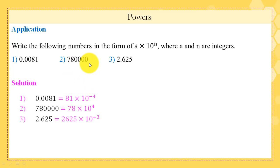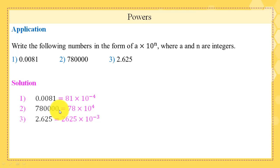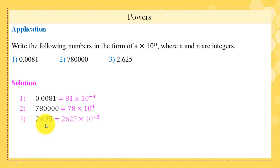For 780,000: you can write it as 78 times 10,000, and 10,000 is 10 to the power 4, so 780,000 equals 78 times 10 to the power 4. Alternatively, place a decimal point behind the last zero and count four zeros before the decimal point to get the same result. Finally, 2.625 has three numbers after the decimal point, so we get 2625 times 10 to the power minus 3.